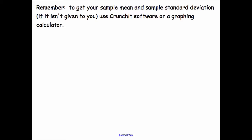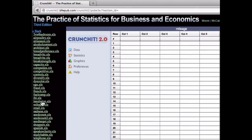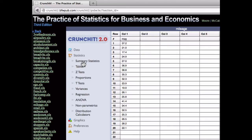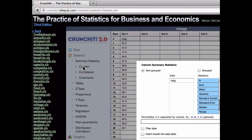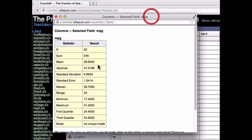I'm going to show you an example of how to use Crunchit. I go to Crunchit online. Let's say I'm looking at chapter 7 and I'm interested in mileage. I hit the statistics button, summary statistics, column, miles per gallon. Don't forget to highlight the column miles per gallon because that's what we're looking at here. And then hit OK.